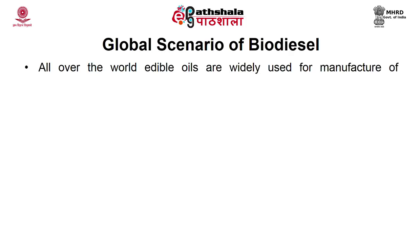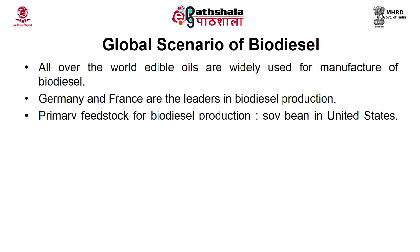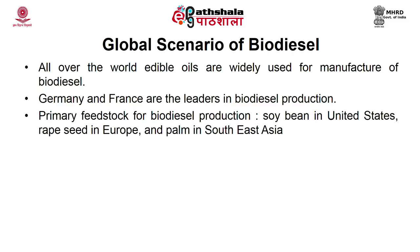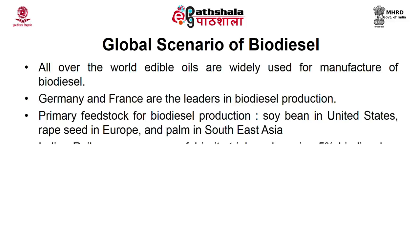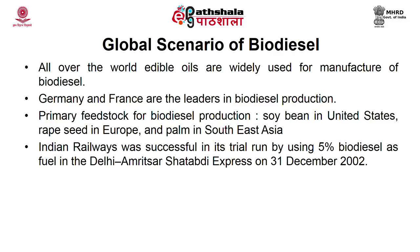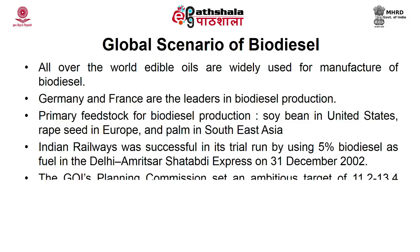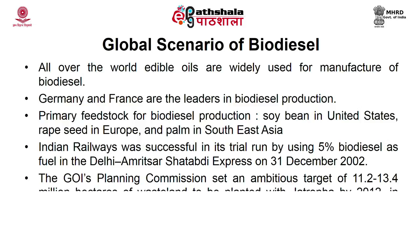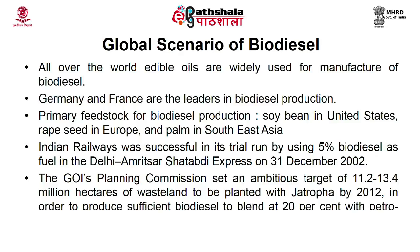All over the world edible oils are widely used. Germany and France are the leaders in biodiesel production. The primary feedstock in the United States is soybean, in Europe it is rapeseed, and in South East Asia it is palm. Indian Railways conducted a successful trial run using 5% biodiesel in the Delhi–Amritsar Chhattisgarh Express in 2002. India's Planning Commission set a target of 11.2 to 13.4 million hectares of wasteland to be planted with Jatropha to achieve 20% blending.